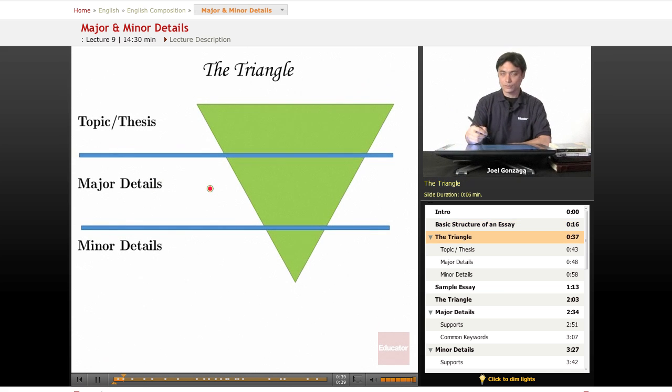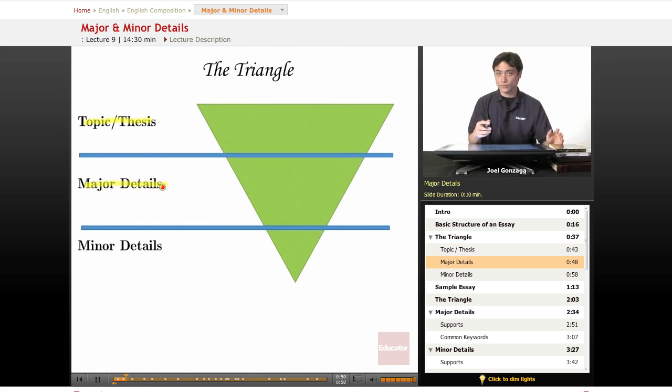We got a triangle here. The triangle represents what's most broad and what's most narrow. Your topic and thesis is the most general thing that you can come up with. And below that, we have what are called major details. These are details that are still connected to the topic and the thesis somehow, but they're a little bit more narrow, a little bit more specific.